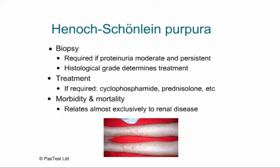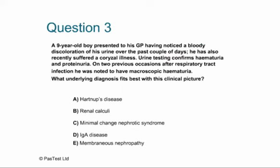Question 3: A 9-year-old boy presents with bloody discolouration of his urine over the past couple of days and a corysal illness. Urine testing confirms haematuria and proteinuria. On two previous occasions after respiratory tract infections he had macroscopic haematuria. What underlying diagnosis best fits? Options: A) Hartnup's disease, B) renal calculi, C) minimal change nephrotic syndrome, D) IgA disease, or E) membranous nephropathy.